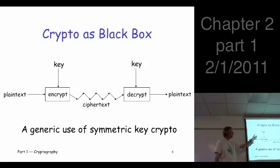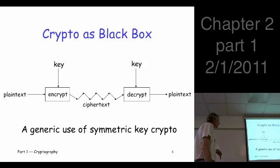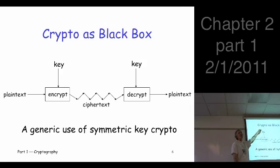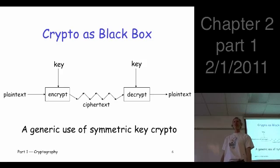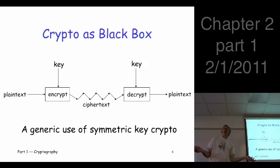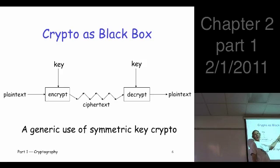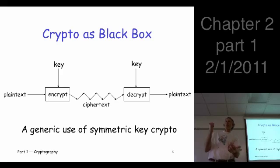Here's our generic picture of a cryptosystem to make the terms clearer. You start with plaintext, it goes into the algorithm along with the key, and what comes out is ciphertext. The squiggly line means you can send it and anybody can see it and you don't care — it's presumed secure. On the other side, the person you're communicating with has the same key in a symmetric system, runs the decryption algorithm, and converts the ciphertext back to plaintext.